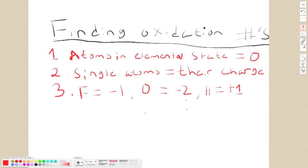Now we're going to go over how to find an oxidation number. Finding oxidation numbers is crucial to a redox reaction because it gives us the overall net charge of a molecule.